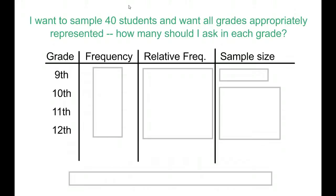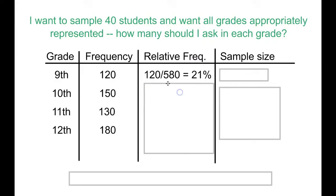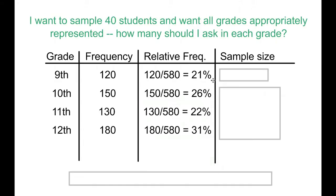So we're looking for roughly 40 students, and in order to do that, I made a frequency and relative frequency chart of the different grade levels. So let's say there's 120 9th graders, 150 10th graders, 130 11th graders, and 180 12th graders. If you take these numbers and you divide them by the total, you're going to get an approximate relative frequency, and that's the percentage. So that's all stuff we've done before.